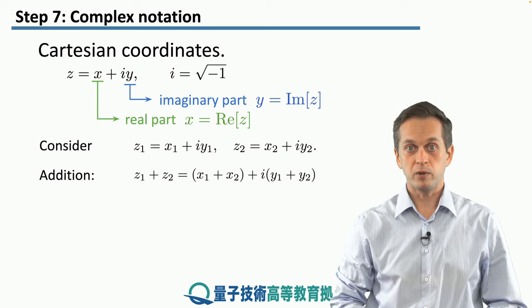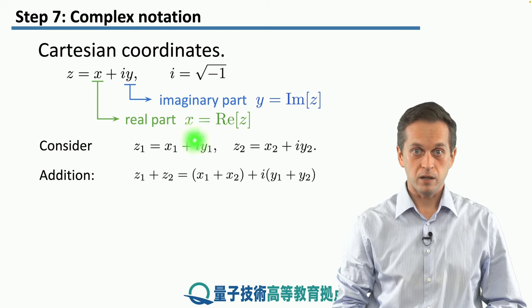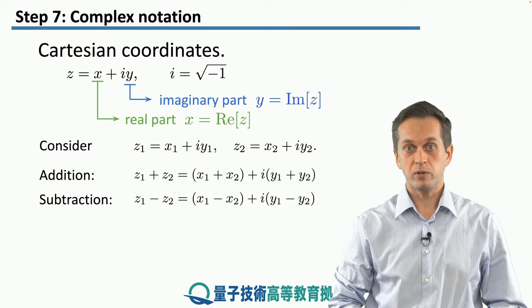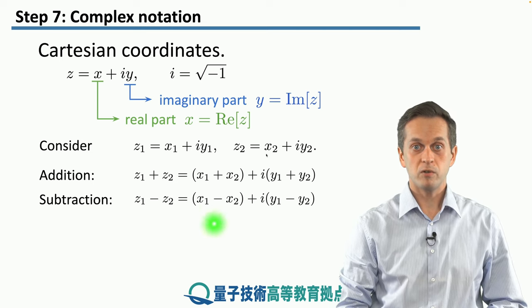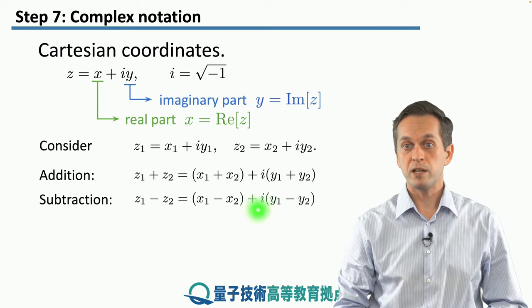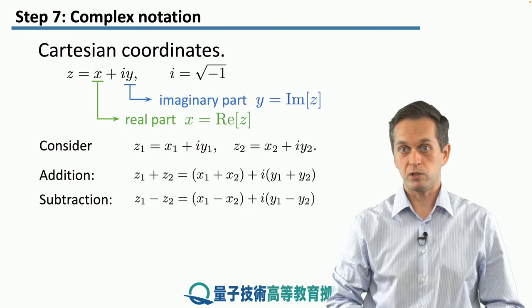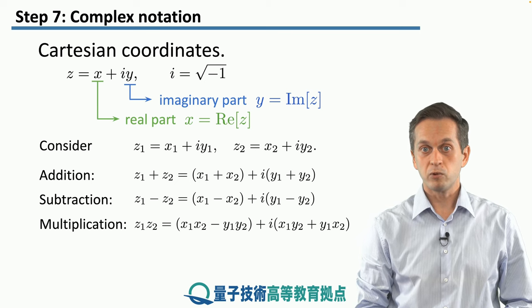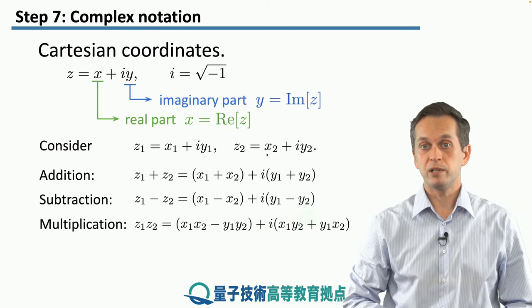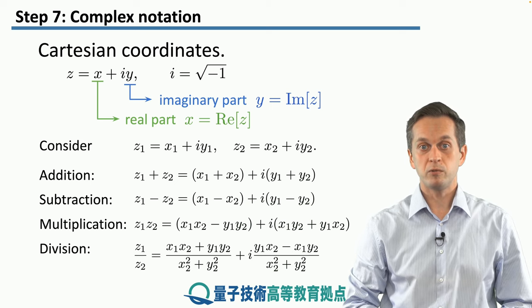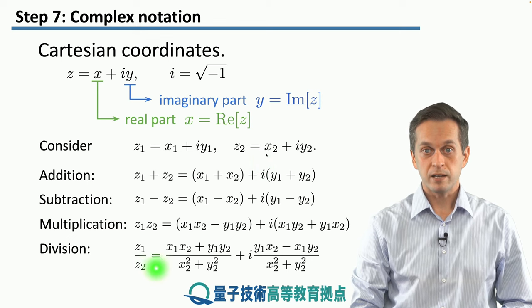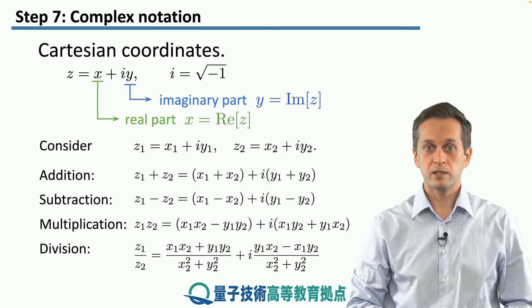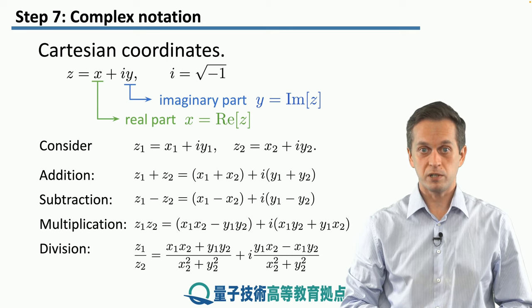If we want to add two complex numbers together, that's very simple: we just add the real parts to get the new real part and add the imaginary parts to get the new imaginary part. Subtraction is just as simple — we take the difference of the real parts and the difference of the imaginary parts. However, if we try to multiply two complex numbers in Cartesian coordinates, the rule to obtain the new real and imaginary parts becomes a bit more complicated. Similarly, if we try to divide two complex numbers, the real and imaginary parts are more involved expressions. So you can see that in Cartesian coordinates it becomes quite difficult to handle even basic operations.